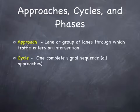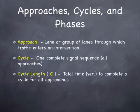A cycle is the complete amount of time that it takes to go from a red light to a red light. We think of it as a clock. The cycle length is the amount of time that it takes to complete a cycle, measured in seconds.